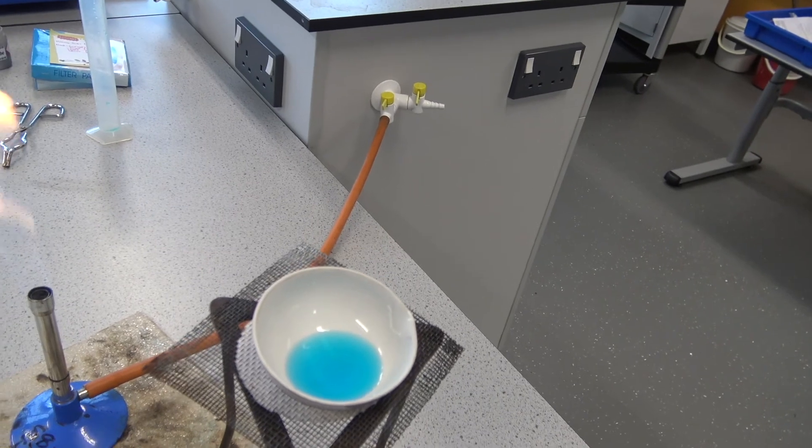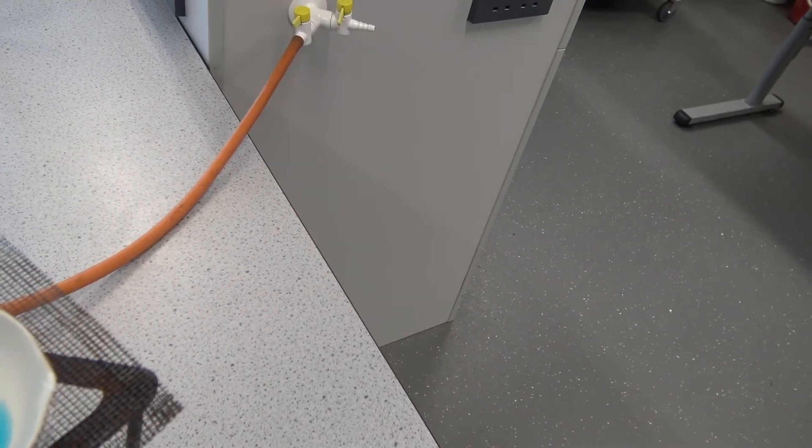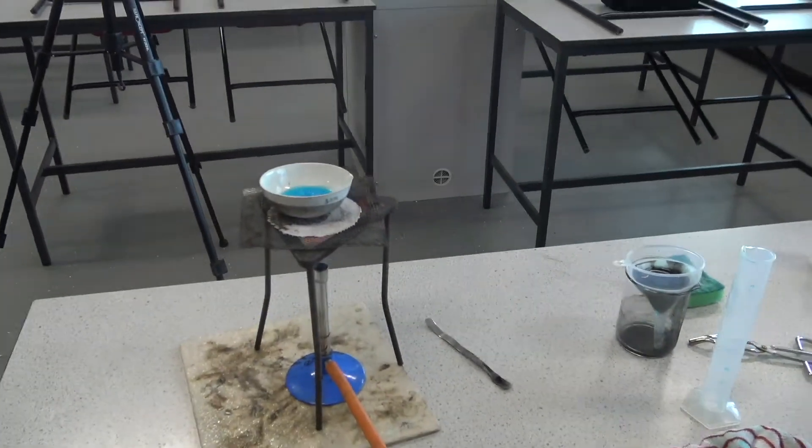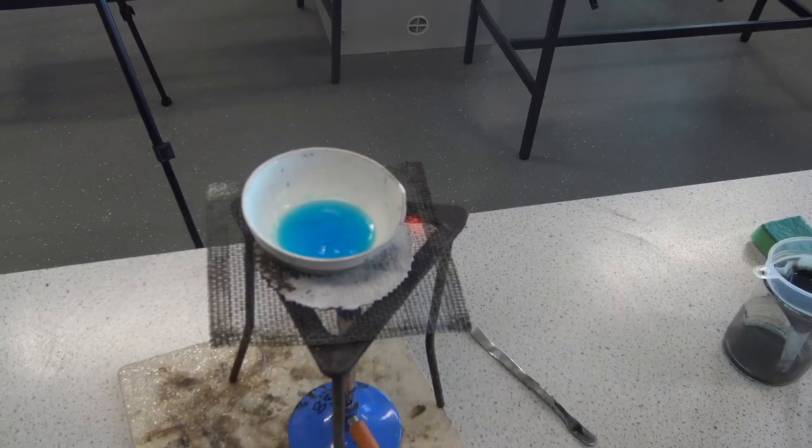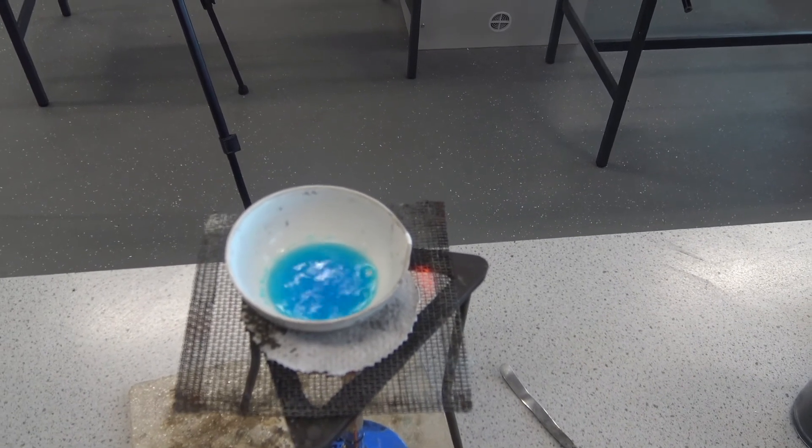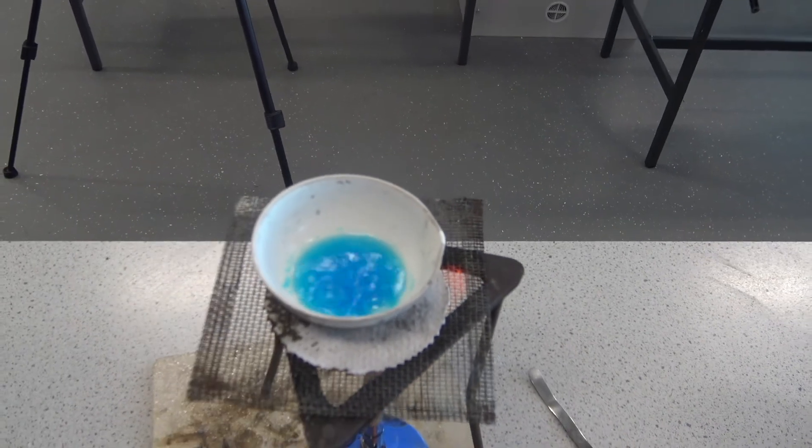We are now going to heat that on a blue flame. Once you start to see crystals form like you have just here and you've evaporated about half the liquid off, you want to take it off the heat.